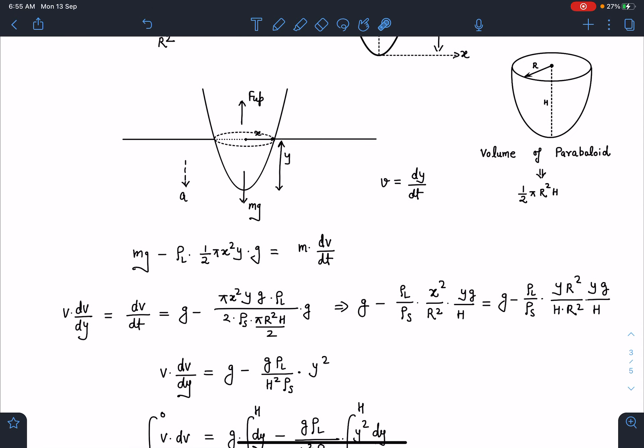Alright so and this acceleration dv by dt I will keep it as v dv by dy and a lot of steps are involved in this line. So take care of this. Now this part will become v dv by dy and here we will get g minus g times rho l by rho s h square y square.